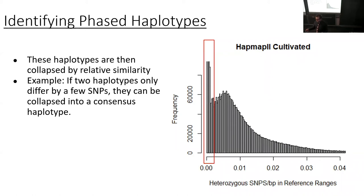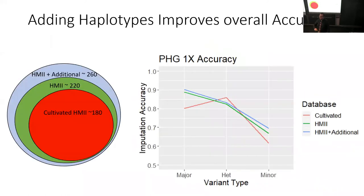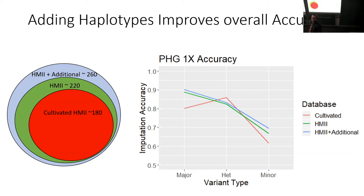Next, I test some levels of imputation accuracy — mainly how well they do on major heterozygous and minor alleles. I also looked at expanding the database beyond just the cultivated set. The smallest red circle represents just the cultivated set, and then I added the rest of the HapMap and some additional clones. The smallest database actually did pretty well with the heterozygotes, but overall, as we sample more haplotypes into the database, imputation accuracy increases.